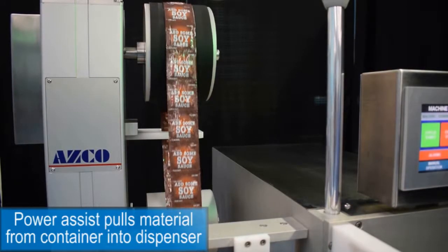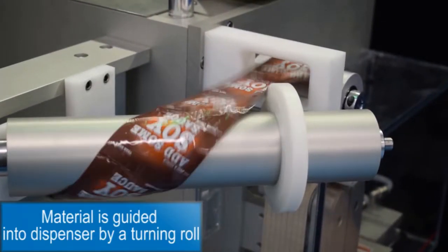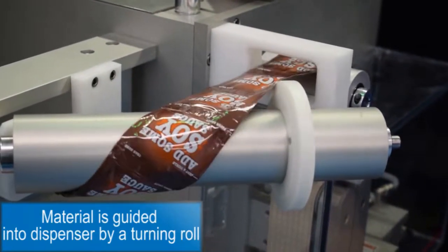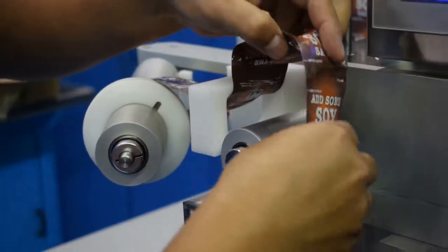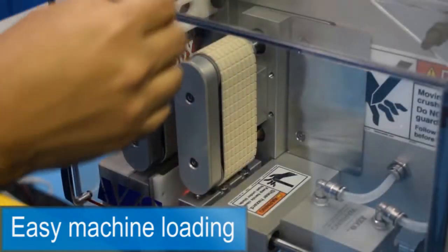A power assist pulls the material from a container and a turning roll guides it into the dispenser. The operator guides the pouch into the cantilever dual servo drive belts.